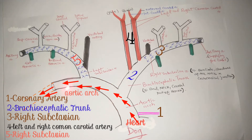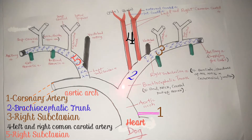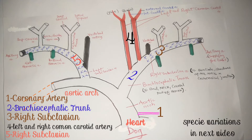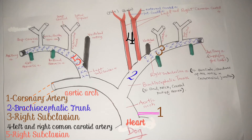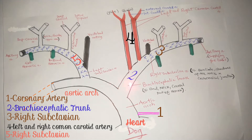So it ascends, forms an arch, and then descends. In this video we shall be looking at the dog specifically — the canine — because there are species variations. In my next video I shall be showing you some of those variations. So in the dog, the second branch apart from the coronary artery is the brachiocephalic trunk.